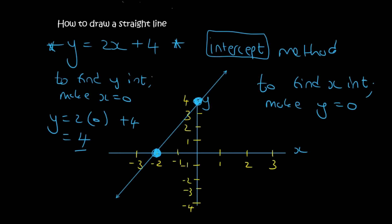So we have 2 methods: the table method and the intercept method. With the table method you could find 2 points, though many teachers will tell you to find 3. For the intercept method, you only find 2 points. You find the x-intercept by making y equal to 0, and you find the y-intercept by making x equal to 0. Just remember that.